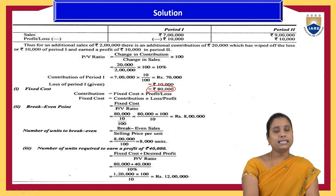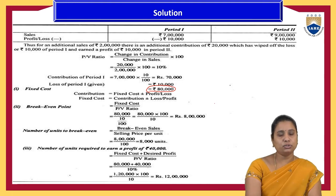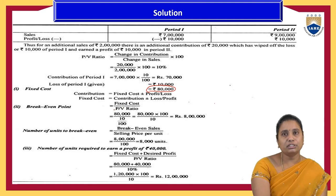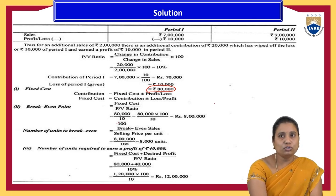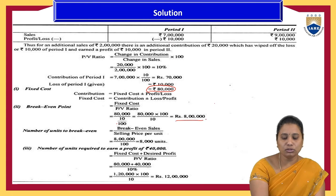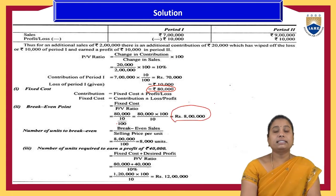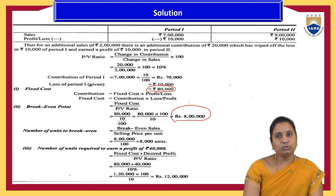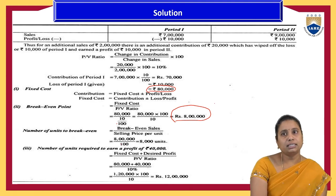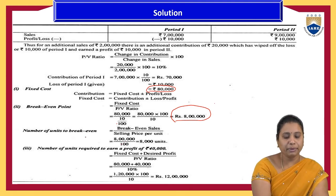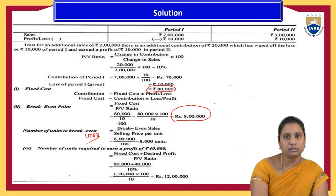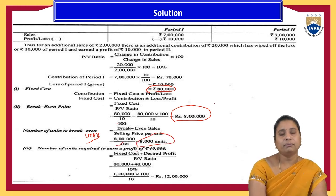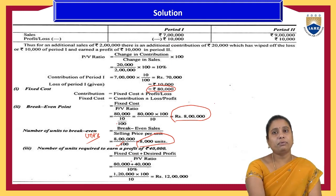The first question is answered — fixed cost = ₹80,000. For the break-even point in terms of units: BEP sales = fixed cost ÷ P/V ratio = ₹80,000 ÷ (10/100) = ₹8,00,000. BEP in units = BEP sales ÷ selling price per unit = ₹8,00,000 ÷ ₹100 = 8,000 units.